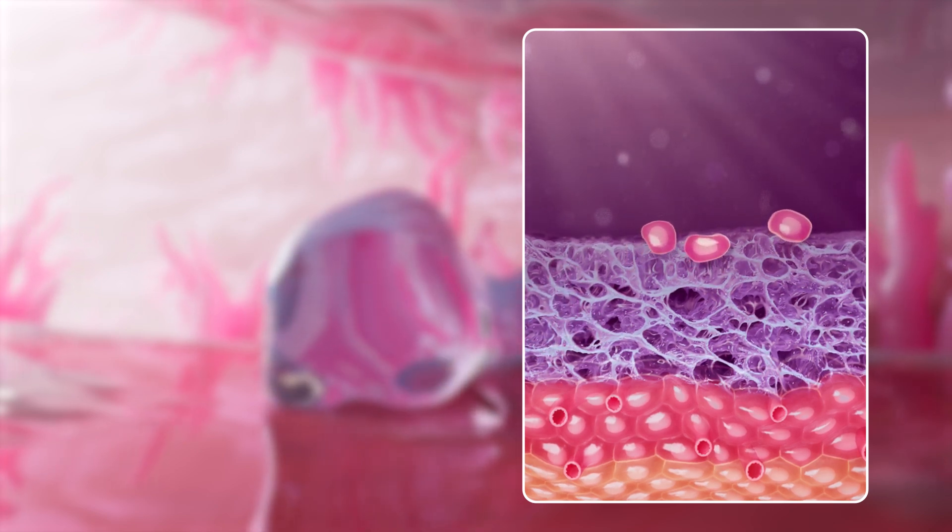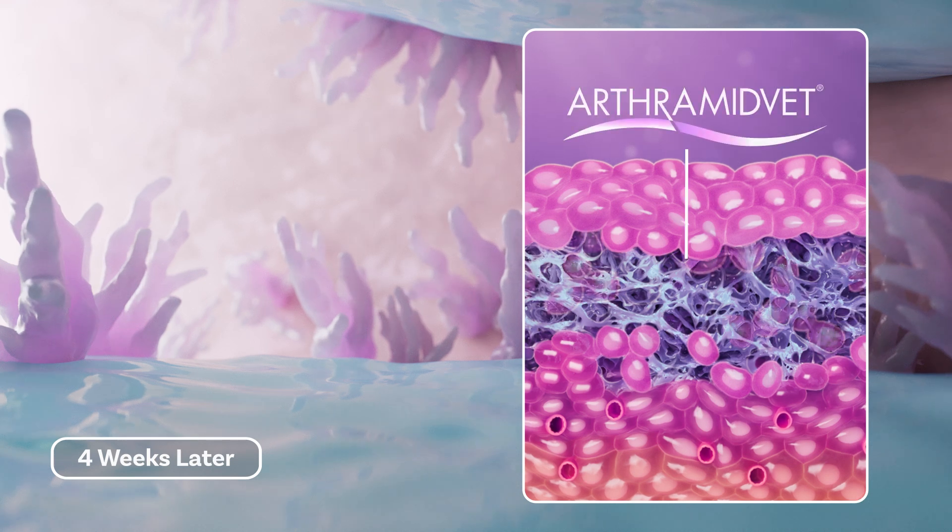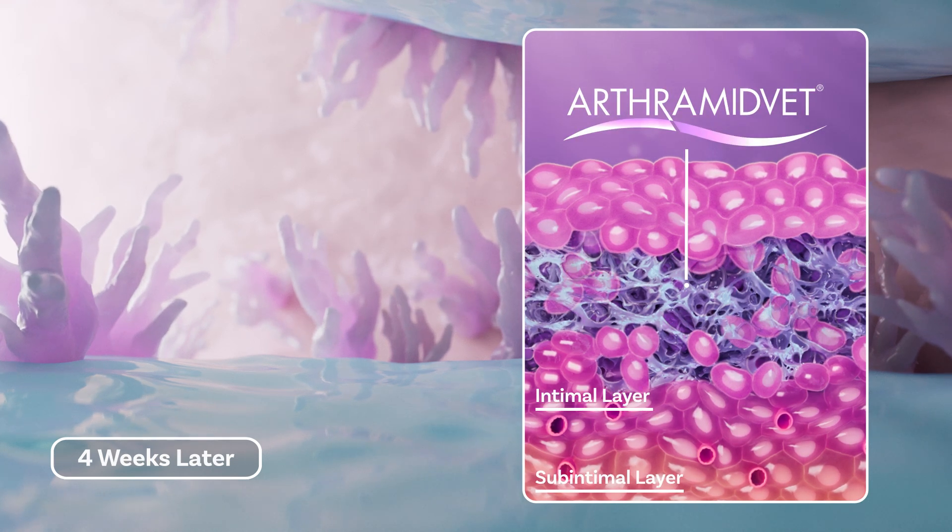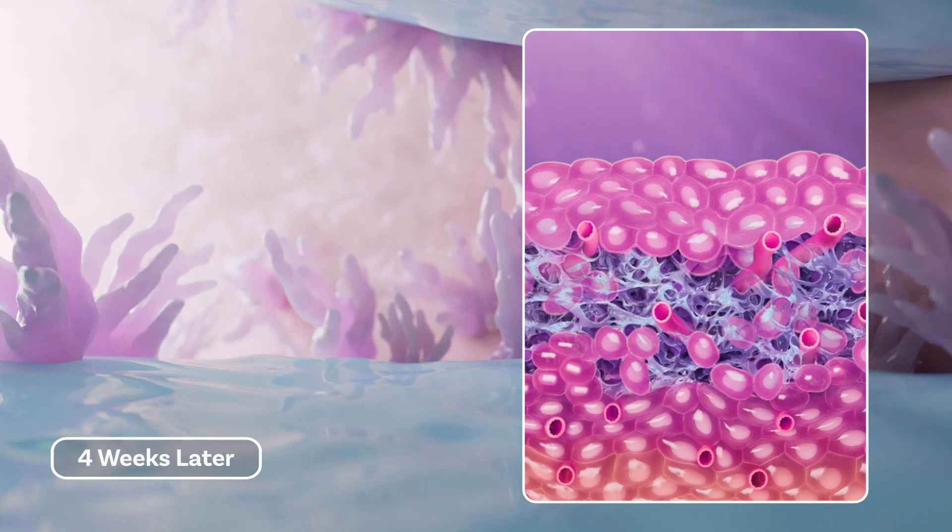Four weeks after the injection, ArthurMedVet becomes fully integrated into the synovium and joint capsule by a combination of cells entering the gel, ingrowth of small blood vessels, and connective tissue formation.